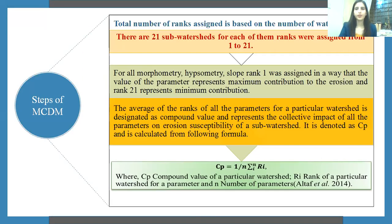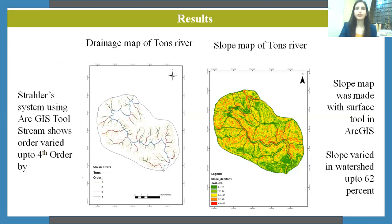For performing multi-criteria analysis, each of the 21 subwatersheds was ranked from 1 to 21. Rank 1 was assigned to the value of the parameter representing maximum contribution to erosion, and rank 21 representing minimum contribution. After ranking, the compound value was calculated for each subwatershed, and based on that, subwatersheds were classified into low, medium, and high vulnerability levels. The drainage map covers the watershed and slope varied up to 62 percent.